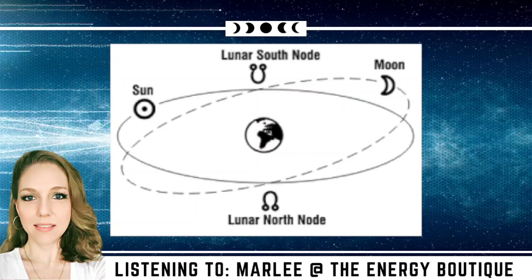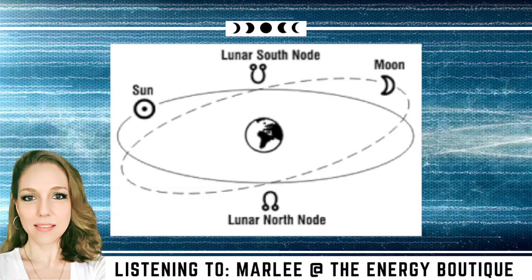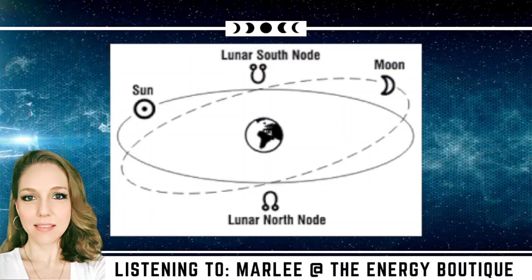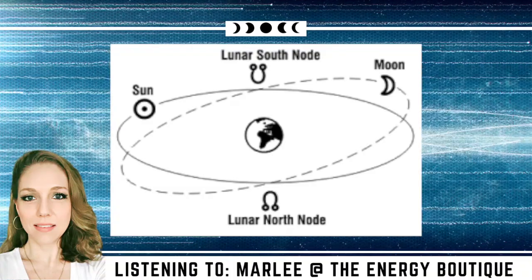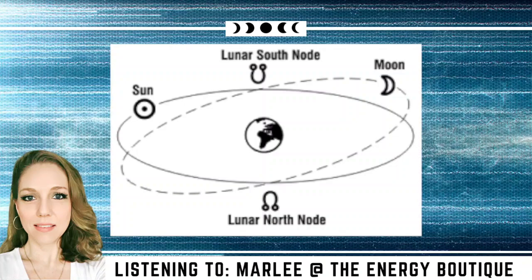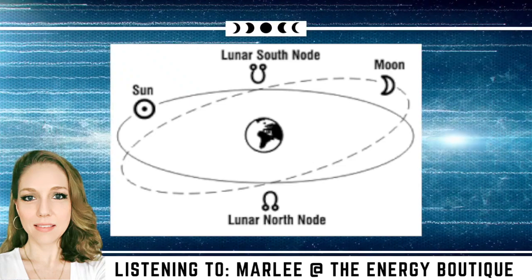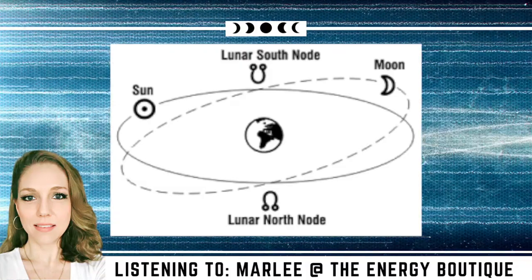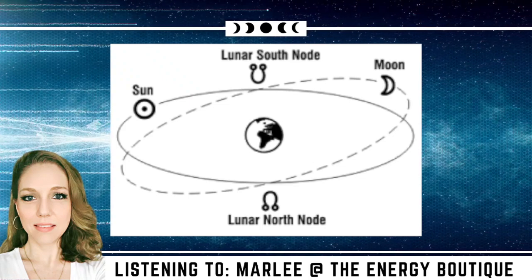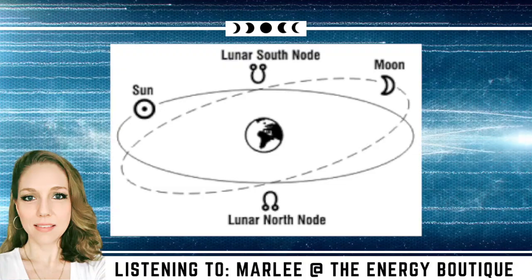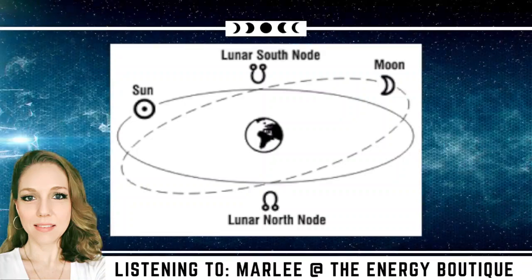The true nodes, or the nodes of the moon, aren't even really real things — they're actually mathematical points. To visualize them, picture the moon with its own orbit, and the sun with its own orbit. From the perspective of Earth, what we get is two particular points where the moon crosses the orbit of the sun. On this elliptic orbit, when the sun and the moon cross each other's paths, these are the north and south nodes of the moon.